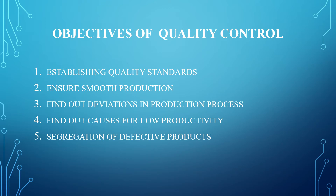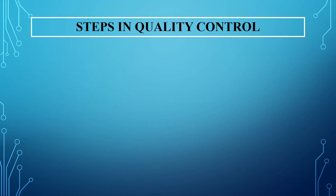Now we move on to the next important concept — what are the various steps involved in quality control, and how do you actually do quality control? You have found out the main reasons why you have to do quality control: to set standards, ensure smooth production, find deviations and take corrective actions, find out causes, and segregate defectives. The first step is to set standards of quality.